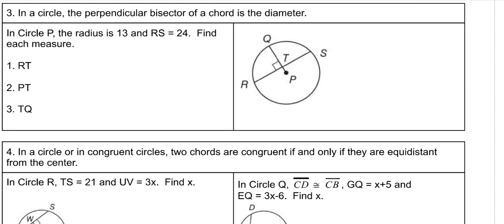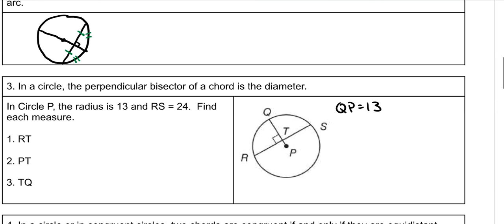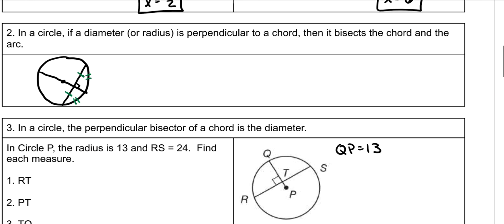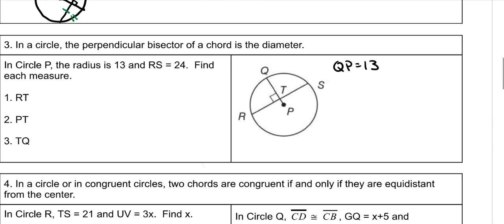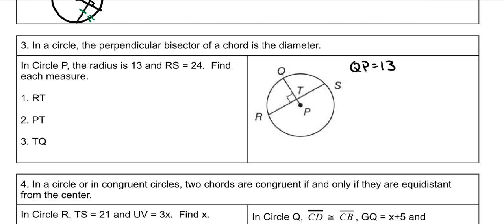In circle P, the radius is 13. So that means that QP is 13. And RS is 24. Find each measure. So RT, we're going to kind of combine this up here, right, with this one down here. They kind of are the same thing.